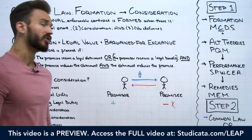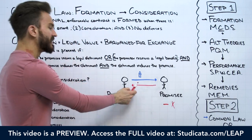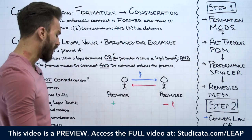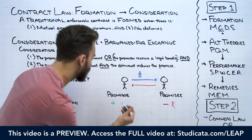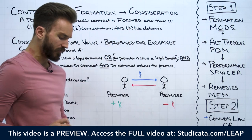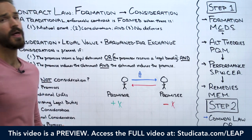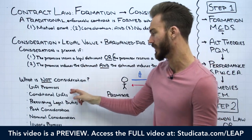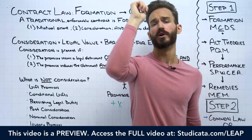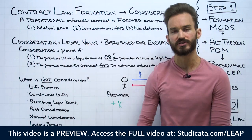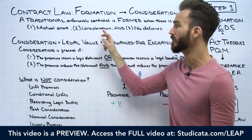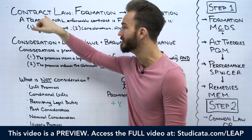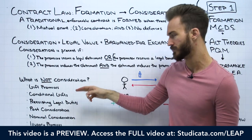We could ask whether the promisor is receiving a legal benefit — but here, the promisor is not getting anything in return. He's giving away the dry erase marker for nothing, so there is no benefit to the promisor. There's no value exchange happening, so it can't be bargained for. In this case, we do not have consideration. This is called a gift promise — our first form of what is not consideration.